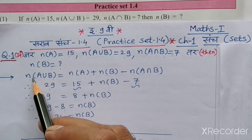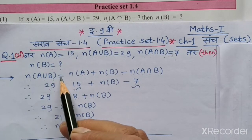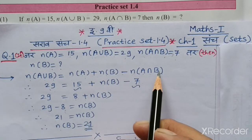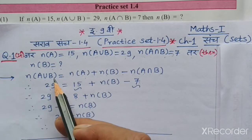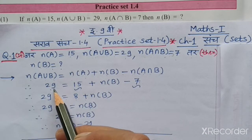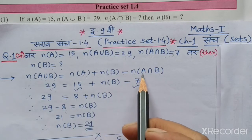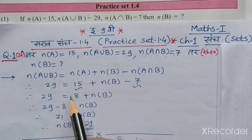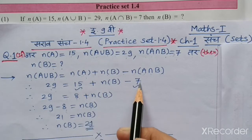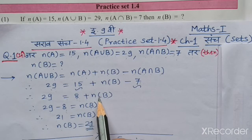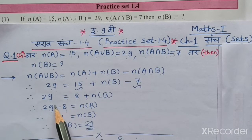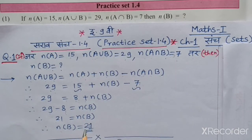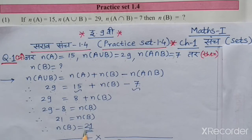We know the formula: n(A∪B) = n(A) + n(B) − n(A∩B). Putting the given values: 29 = 15 + n(B) − 7, which gives 29 = 8 + n(B). Taking 8 to the left hand side: 29 − 8 = n(B). So n(B) is equal to 21.